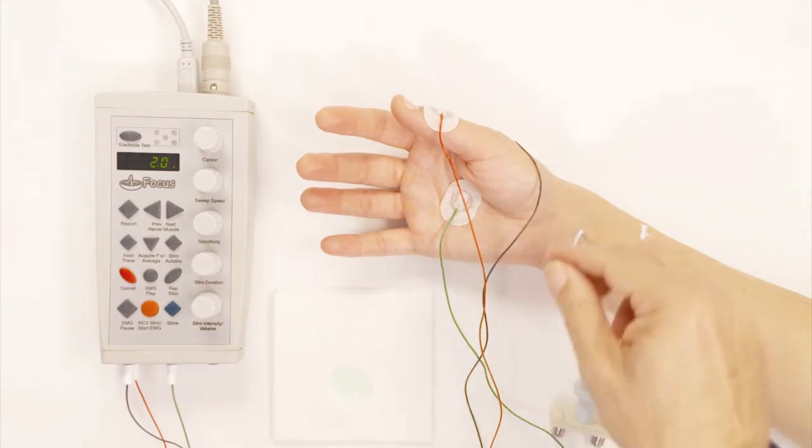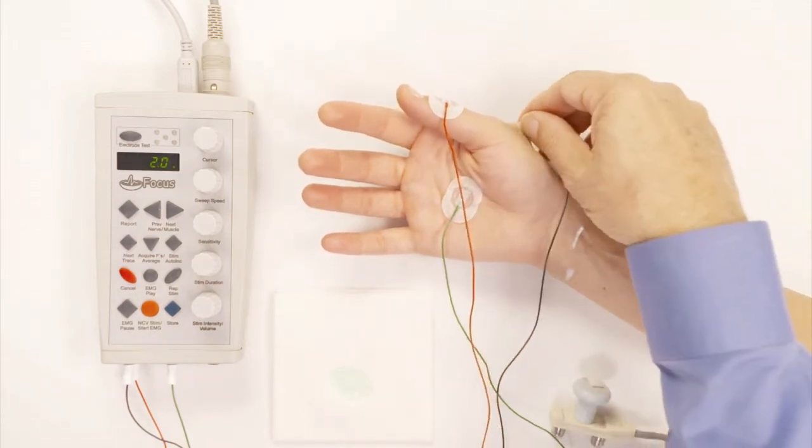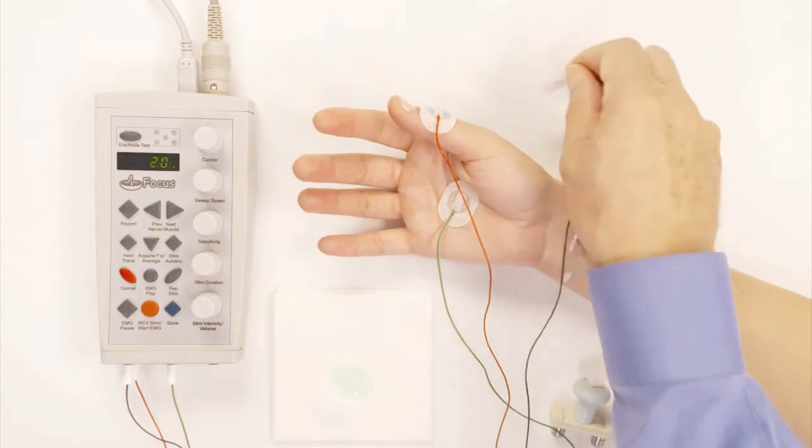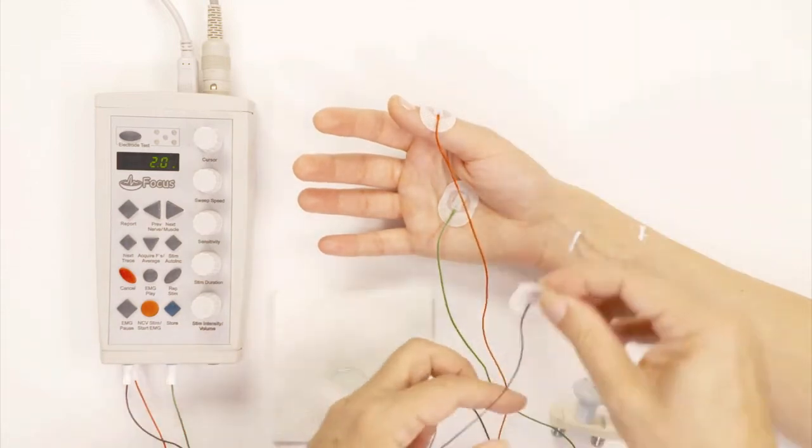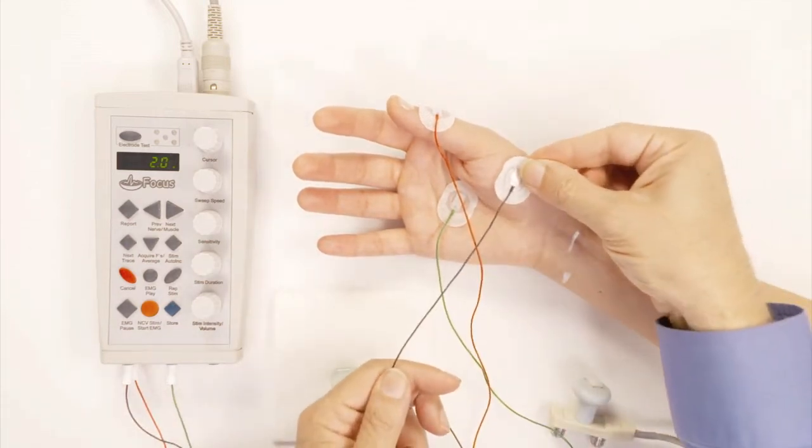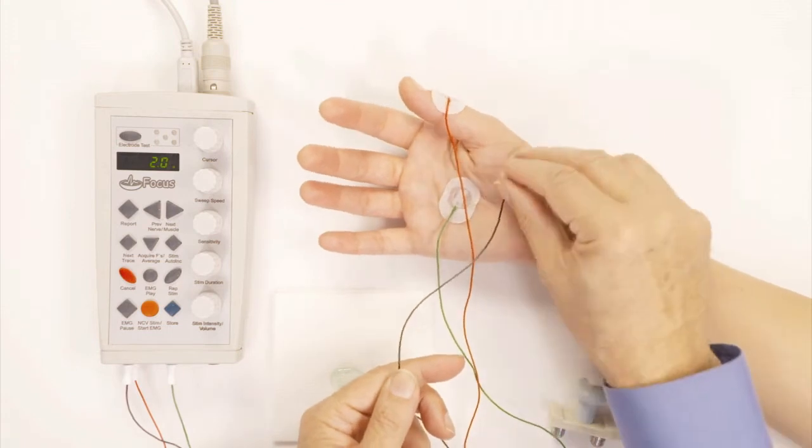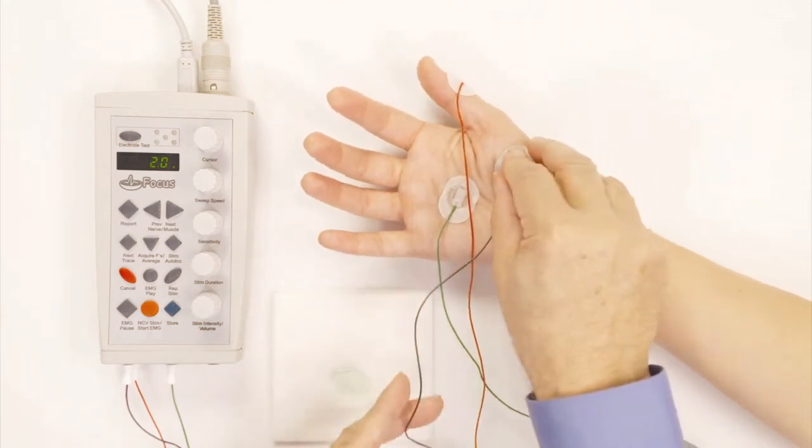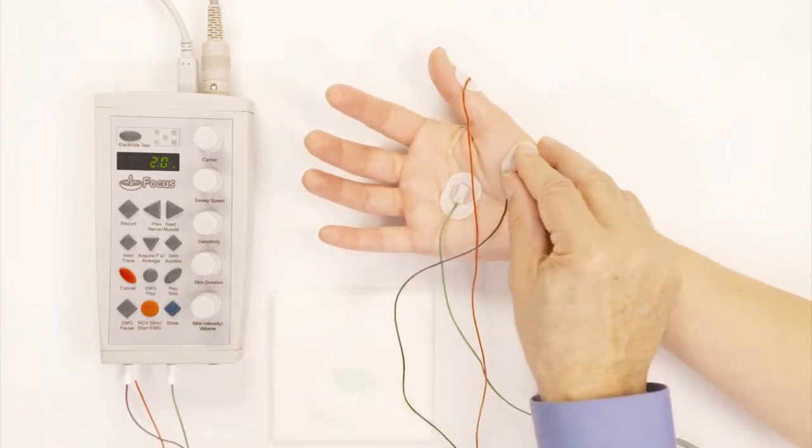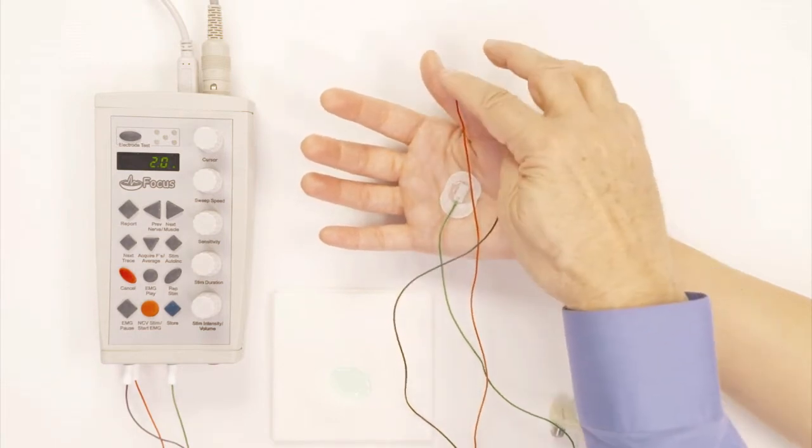So now I'm going to remove the black electrode from where it was for the radial nerve, and I'm going to put it right here over the muscle, which we call the APB. It stands for abductor pollicis brevis. That's the muscle that lifts the thumb up.